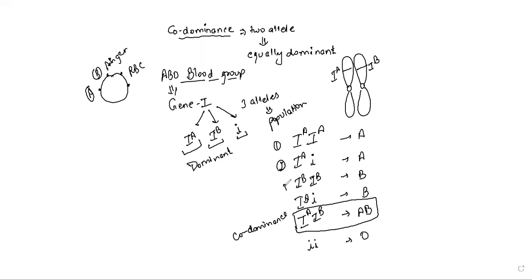When small i is present in homozygous form (ii), it doesn't code for any sugar — so we represent it as blood group O: the RBC surface is completely empty with no sugar present. So there are 6 possible genotypes from the combination of these 3 alleles.